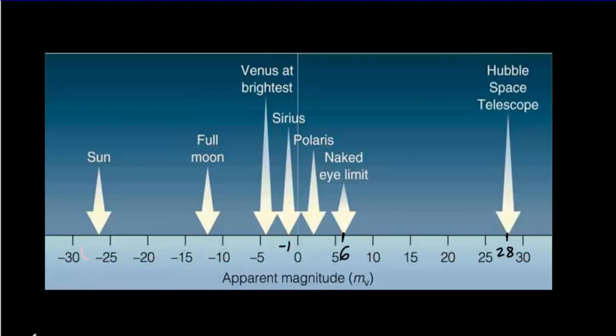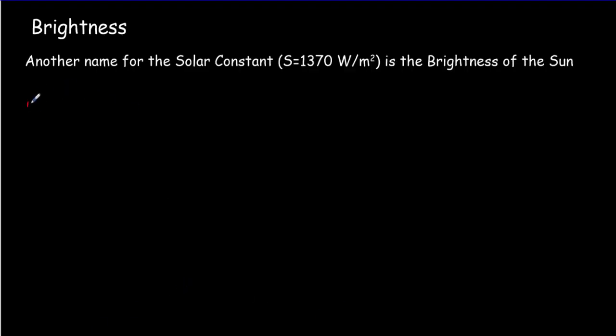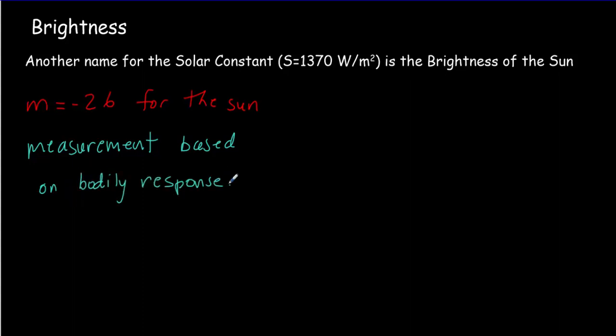We just finished saying that the sun has an apparent magnitude of about minus twenty-six. So let's write that down - we'll use small m for apparent magnitude, and it's equal to negative twenty-six for the sun. That's a measurement based on your bodily response, your physiological response.